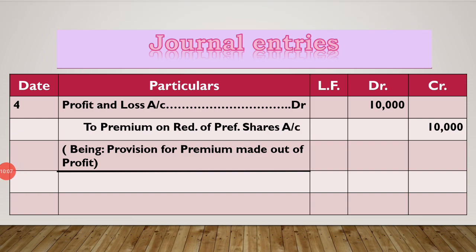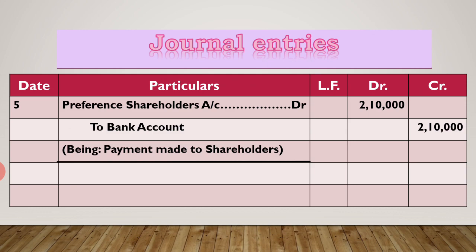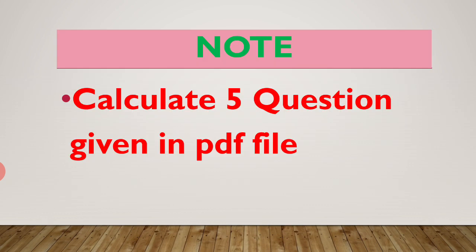Now the fifth entry: payment to preference shareholders. Preference shareholders account debit to bank account, 2,10,000 — because 2 lakh preference shares and 5% premium is 10,000, so total amount paid is 2,10,000. Being: payment made to shareholders.